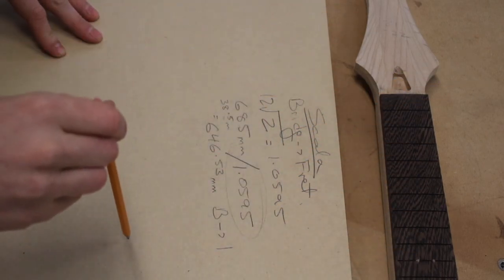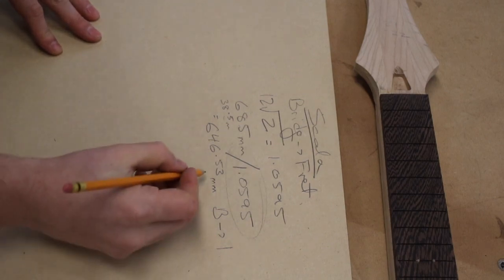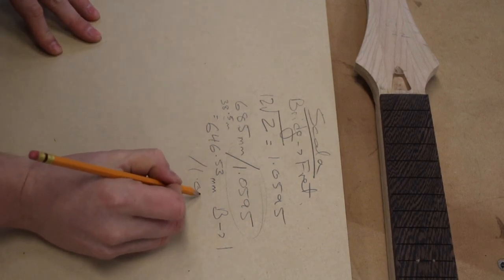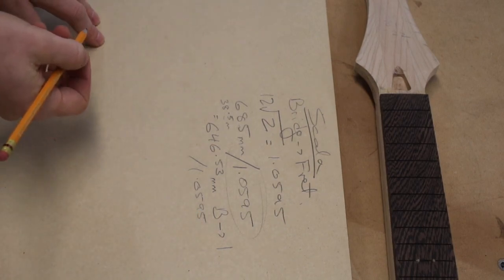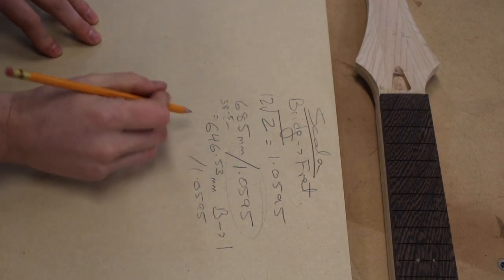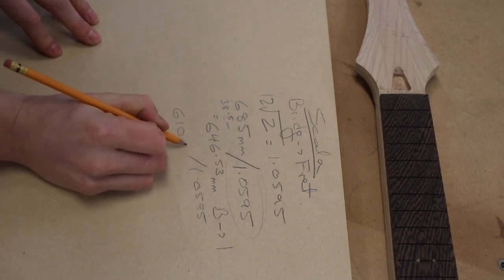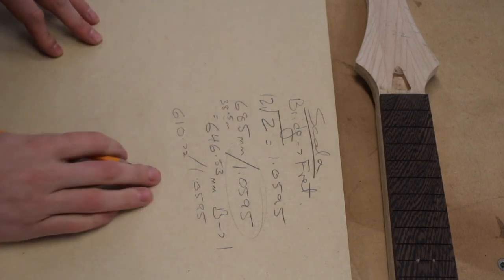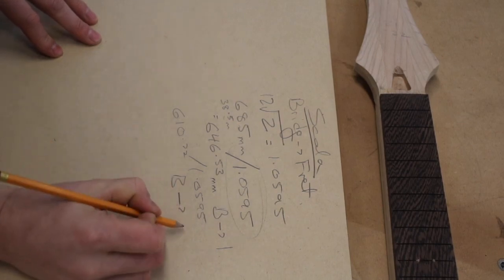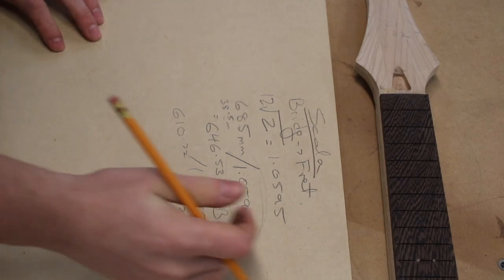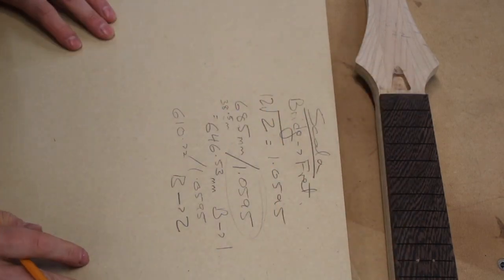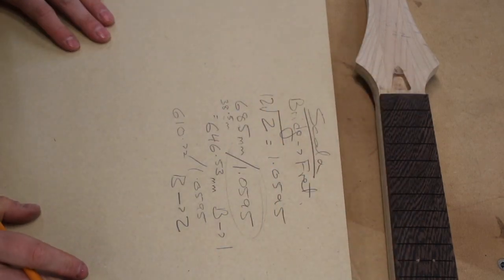And to calculate the distance from the bridge to the second fret, you simply take the new amount, divide by 1.0595, and you get 610.22. And that's the distance of the bridge to second fret overall. And just like the first method, you carry this through all the way down the fingerboard until you get to the desired amount of frets.